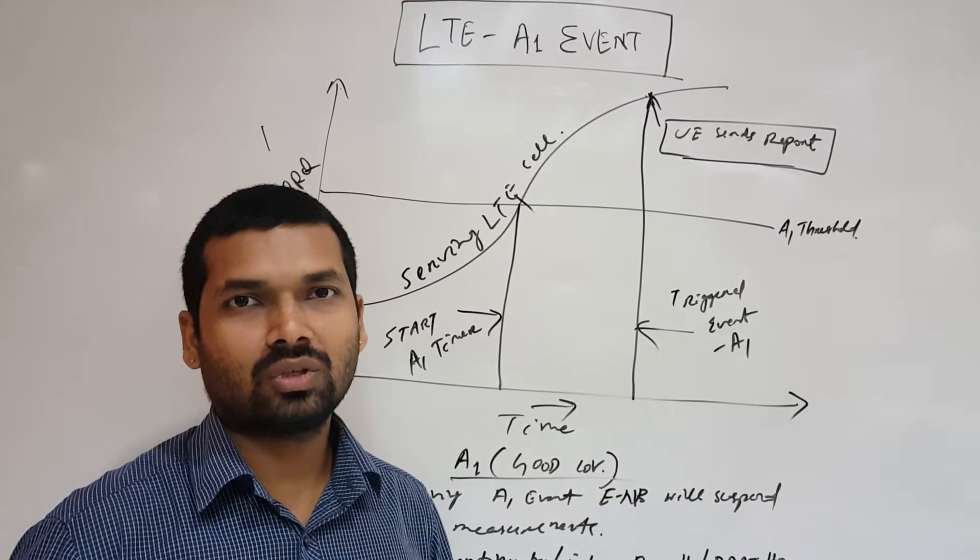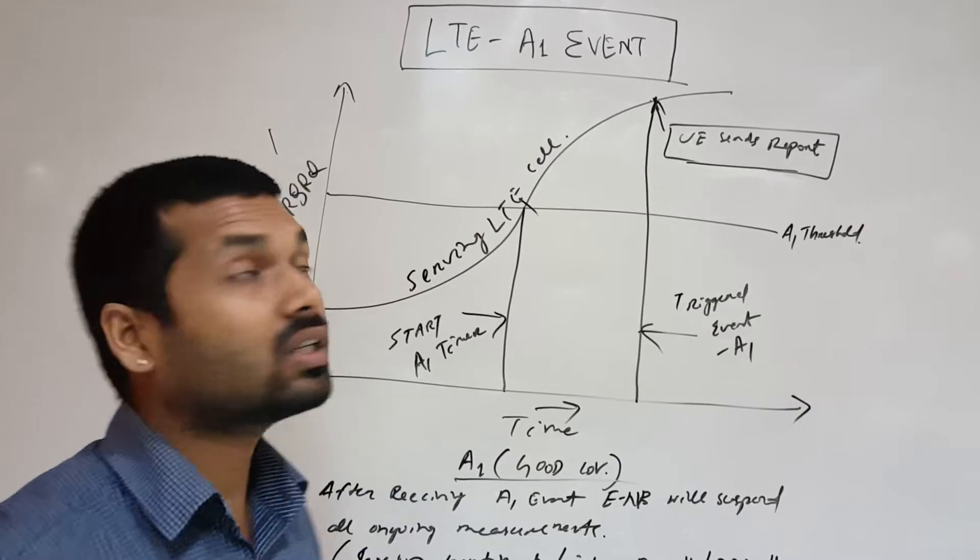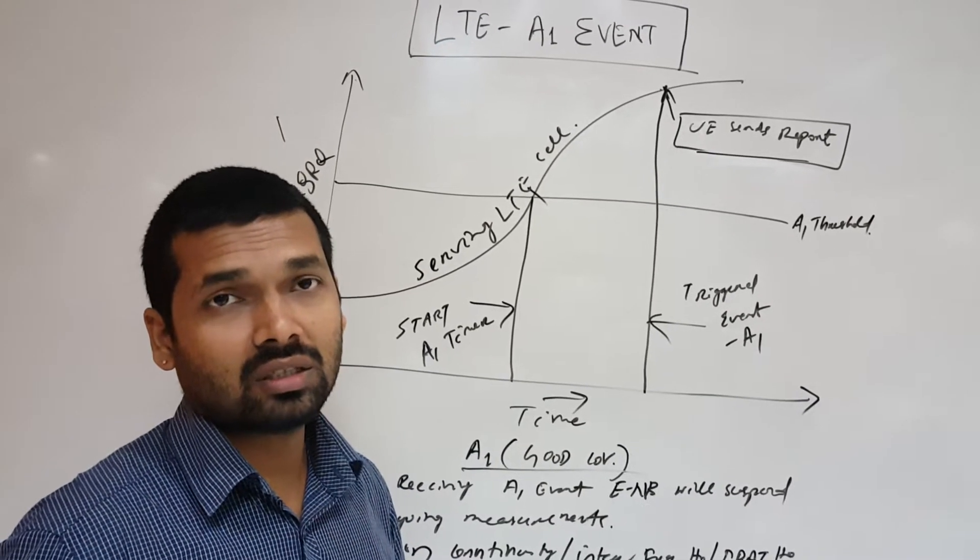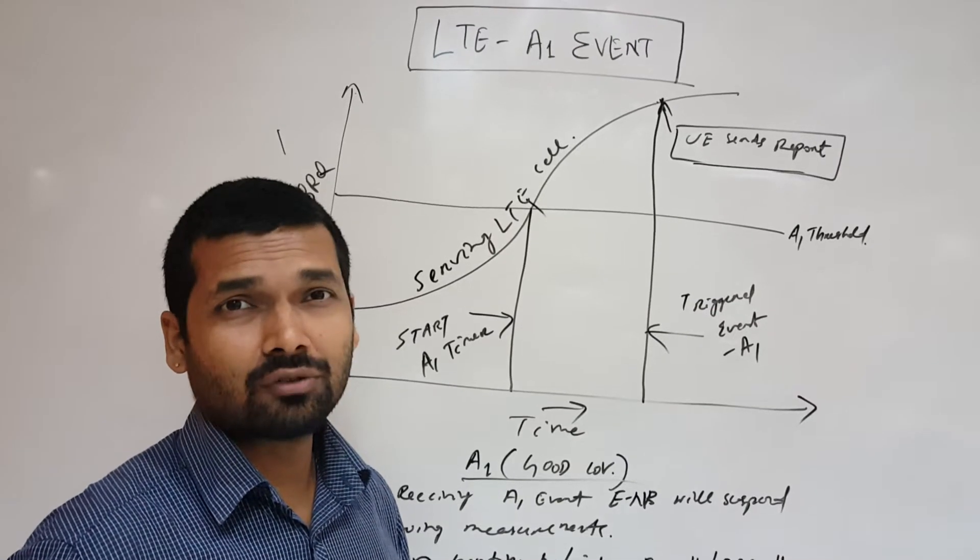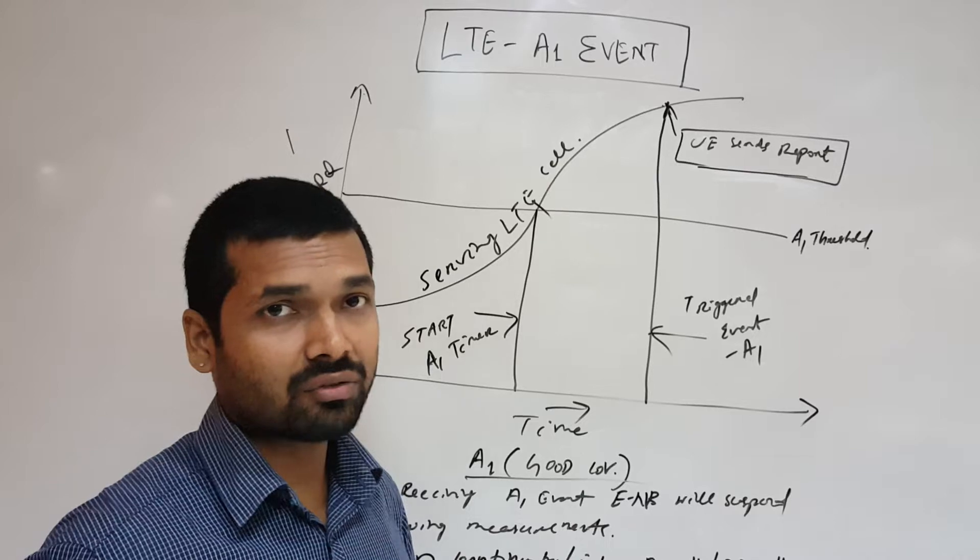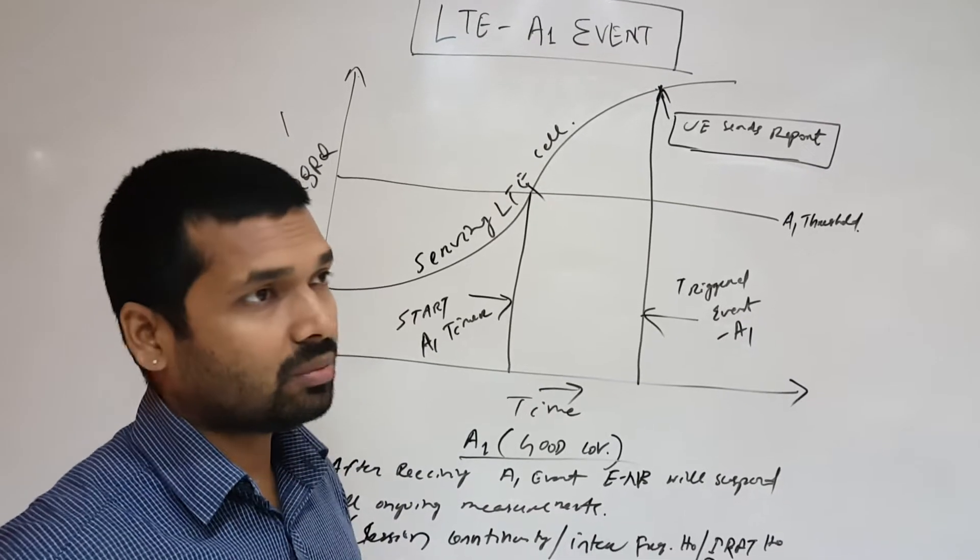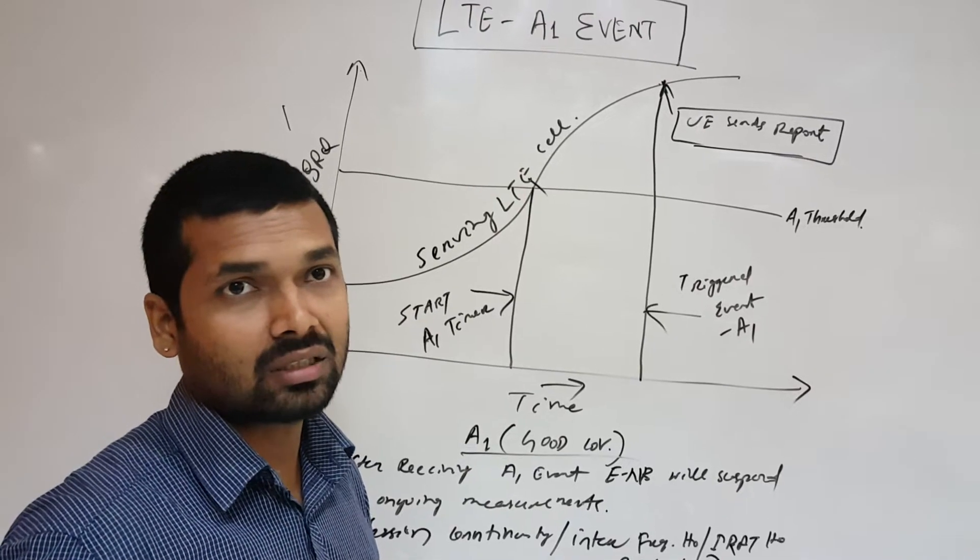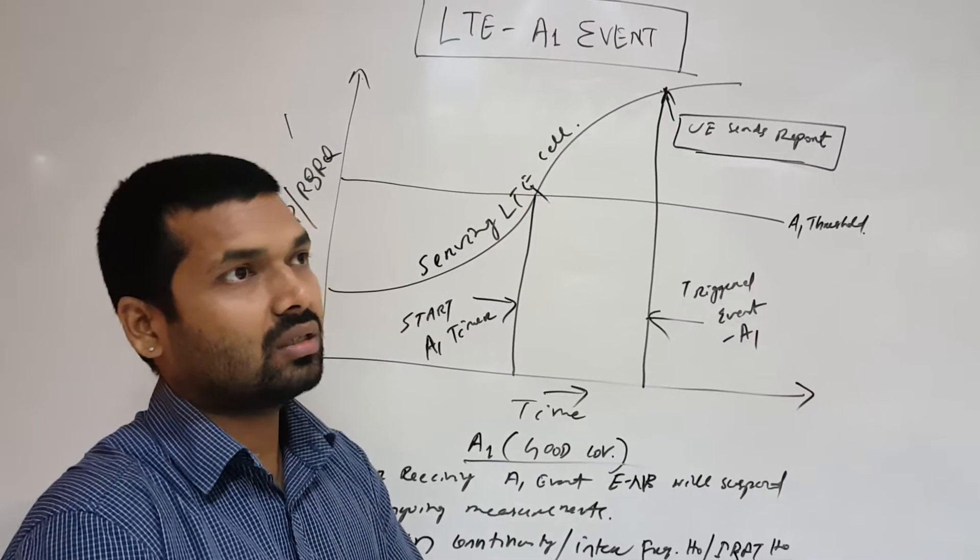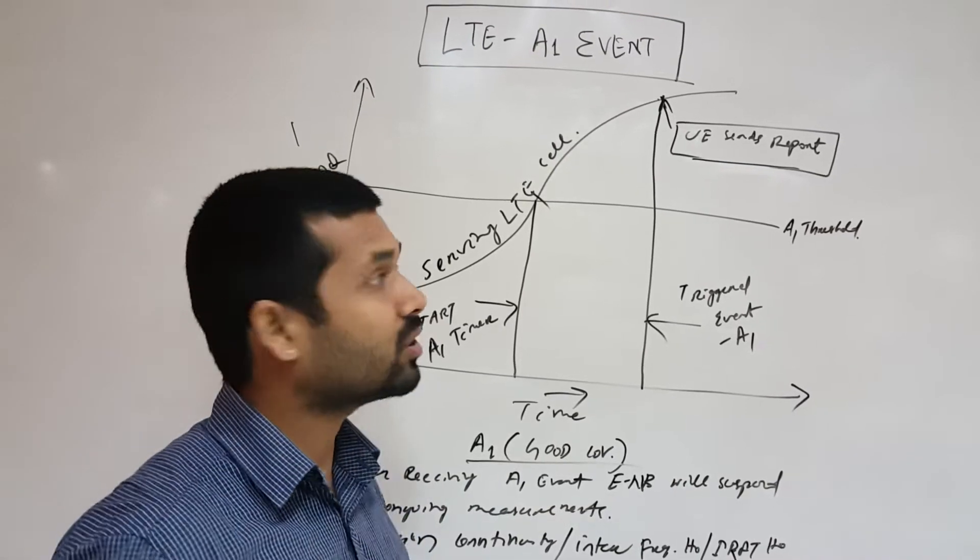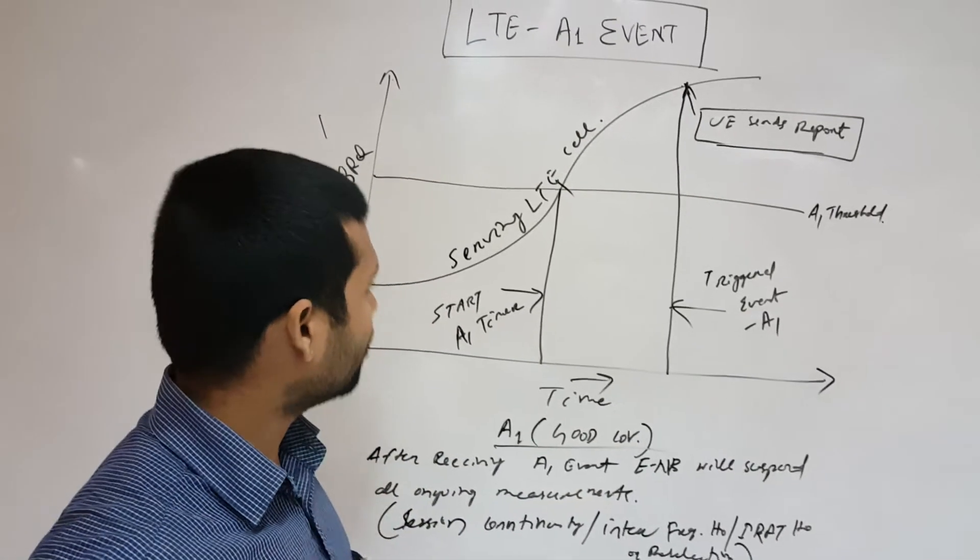Hello, so let's discuss LTE A1 event. This is an event reported when the UE, after experiencing bad coverage, comes back to the original good coverage range and we immediately start all the reselection of the handover procedure or the measurements. Whatever else is happening, all the sessions we immediately close and come back to non-reporting mode. So let's see how it happens.